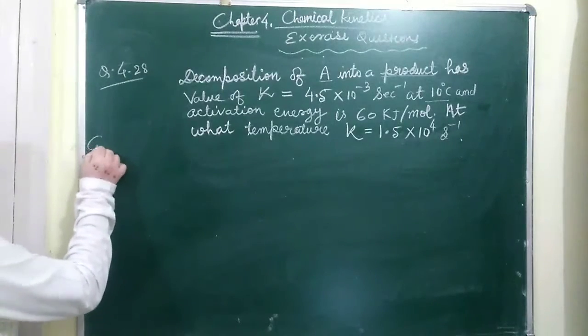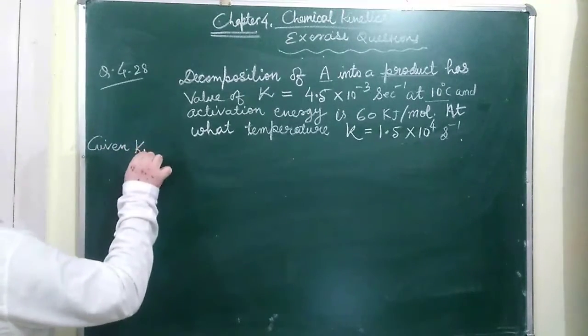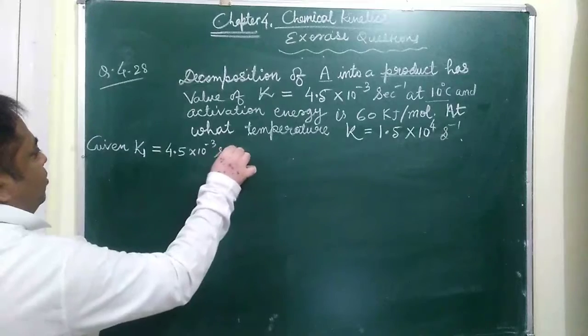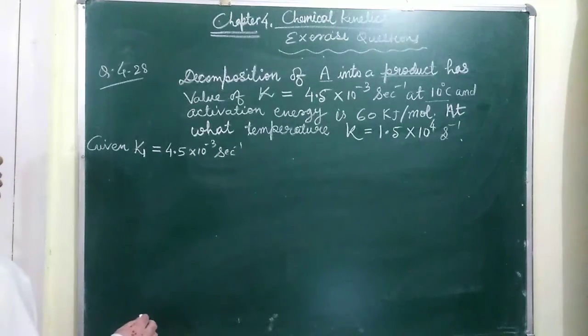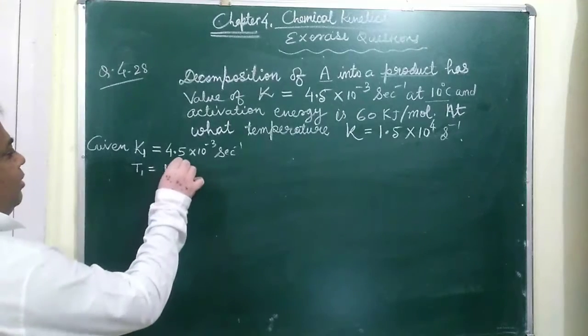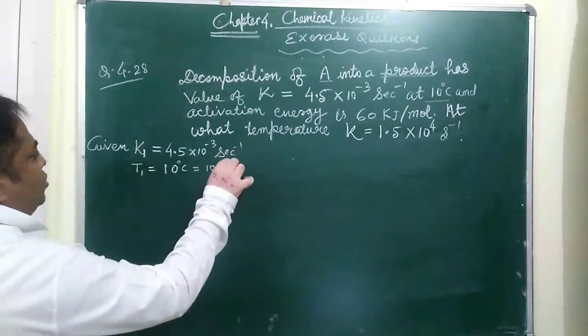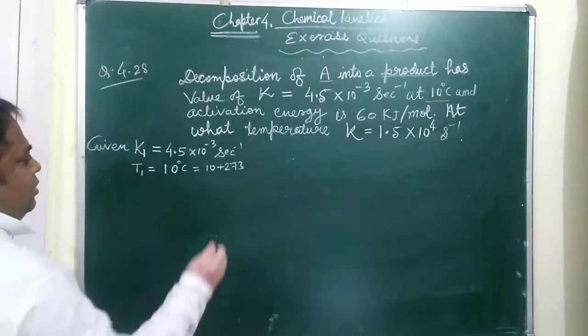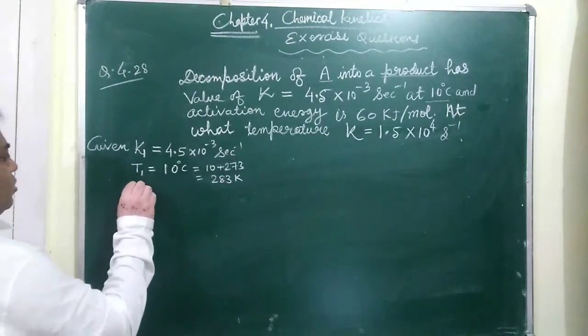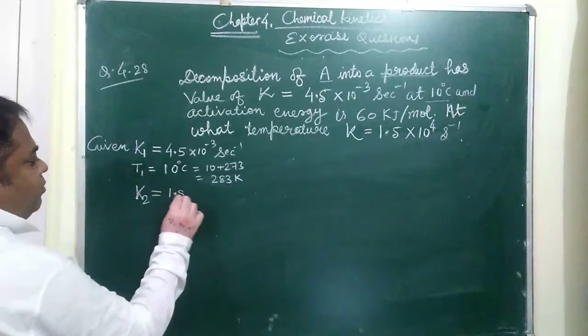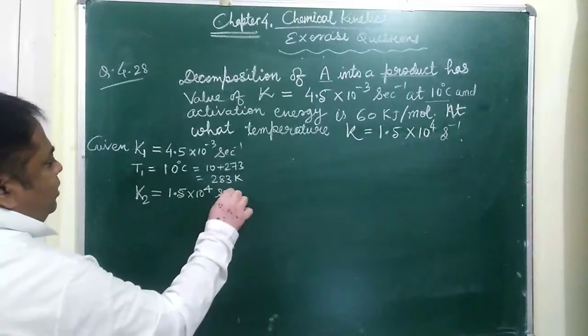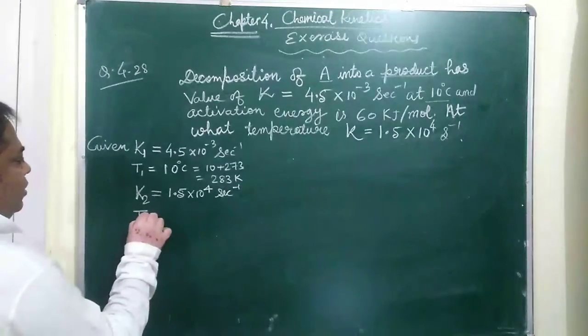So given is K1 is equal to 4.5 times 10 to the power minus 3 per second and T1 for this is equal to 10 degree C that means is equal to 10 plus 273.15 that we can avoid. So we will become equal to 283 Kelvin, T1 is given. Now K2 is also given. K2 is equal to 1.5 into 10 to the power 4 per second and we have to find out T2 is equal to what.